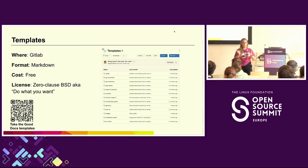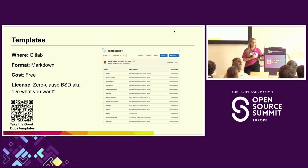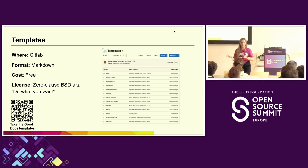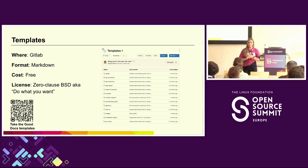Our flagship project is preparing templates for various content types that solve different business or community problems. Here's how our repository looks — currently all the templates are in Markdown format, but we're looking into providing various deliverables like AsciiDoc, RST, or others. If you're interested in that, you can also help. They are released under a Zero-Clause BSD license, which basically means do whatever you want with them — use, mutate, inherit, change, even in commercial development. It's the most relaxed type of license.